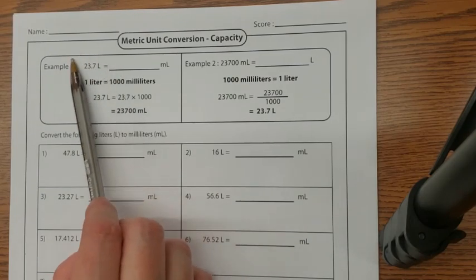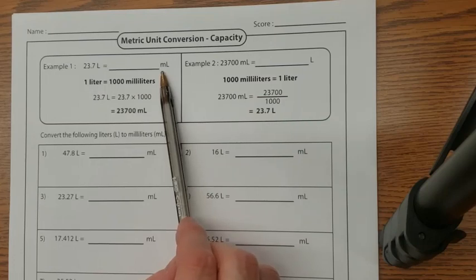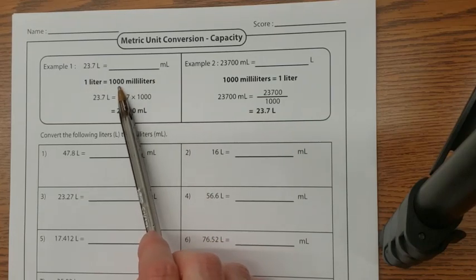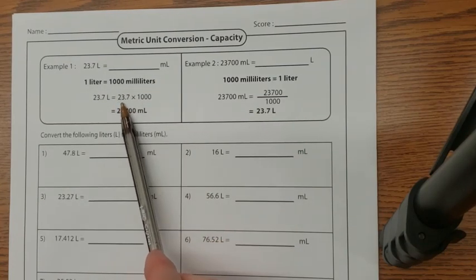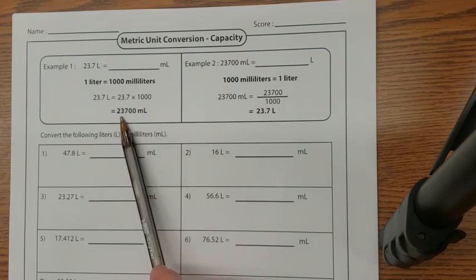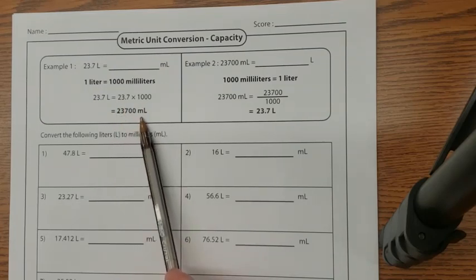So liters is the bigger quantity, and if I want to convert that into milliliters, I just simply have to multiply it by a thousand. So you just go 23.7 times a thousand, you get 23,700 milliliters.